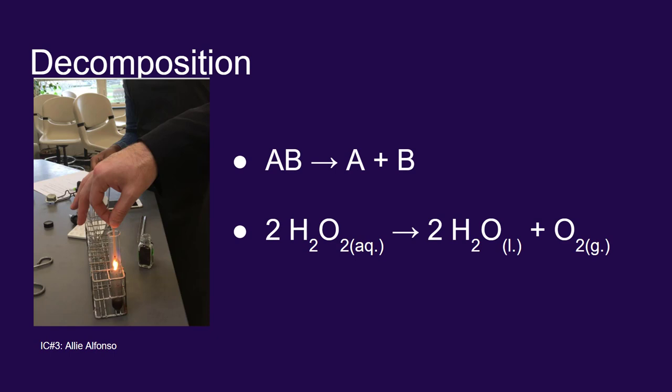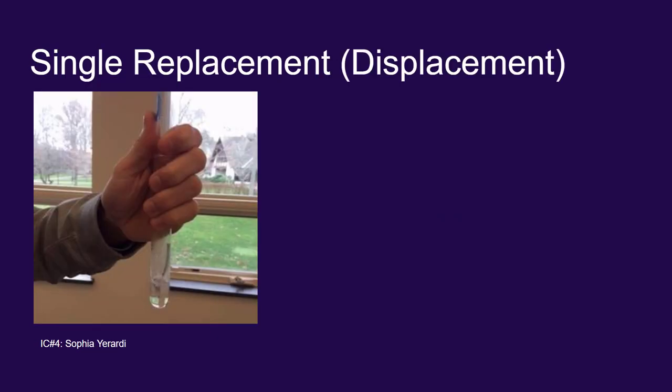Perhaps the most complicated form of a redox reaction is single replacement. We've looked at some of these already as well. A single replacement is an example where you have a lone element that comes in and replaces one of the elements in a compound.